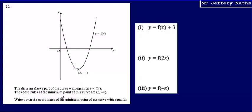We're asked to write down the coordinates of the minimum point of the curve with equation y equals f of x plus 3, y equals f of 2x, and y equals f of negative x. This is some fairly basic graph transformations, and we're going to use a trick.